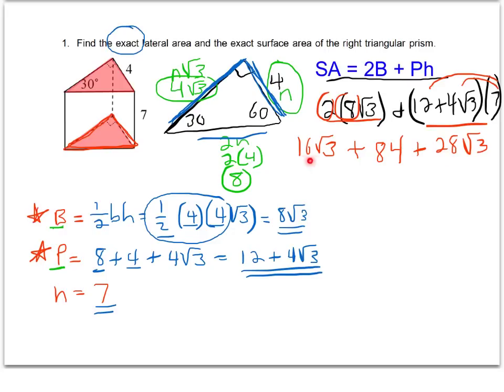Now the final step. I have 3 terms here that I'm adding and I want to combine like terms. Because 16 root 3 and 28 root 3 both have root 3 in it, I can go ahead and combine those. 16 plus 28 is 44 root 3. That root 3 stays in there, and then I'm just going to add the 84.